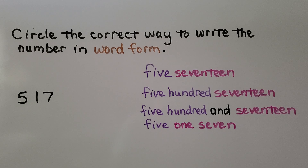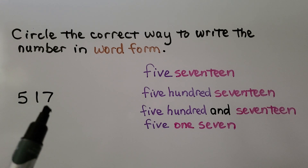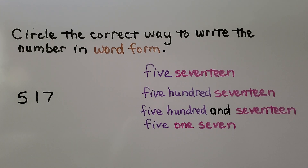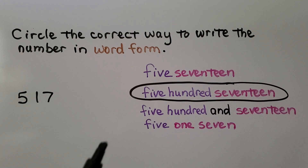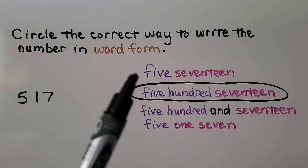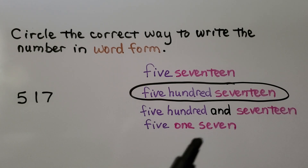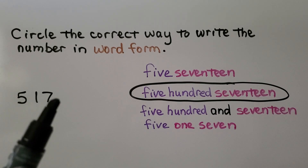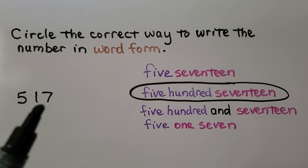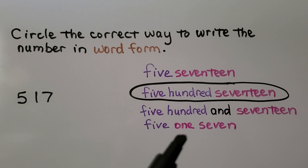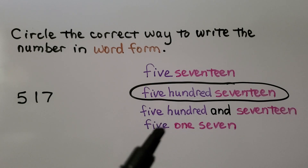Here we need to circle the correct way to write a three-digit number in word form. The correct answer is this one. One option is not correct because it didn't write the word 'hundred.' Another is not correct because it has the word 'and' in it. The last wrong option didn't put the tens and ones digits together as 'seventeen' — it just wrote five, one, seven — and it's also missing the word 'hundred.'